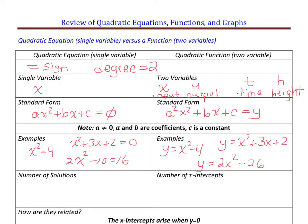The number of solutions of a quadratic can be less than or equal to 2 — it could be zero, one, or two solutions. An example of two solutions: x² = 4. Most of you would say x = 2, the square root of 4, but in truth it's positive or negative 2, because if you square negative 2, you also get positive 4. So that would have two solutions.